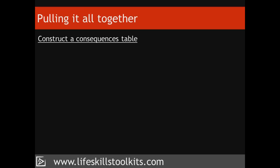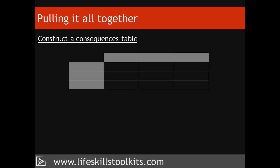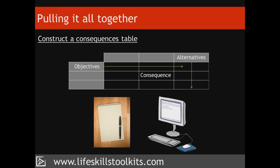Now, construct a consequences table. A consequences table has columns representing alternatives and rows representing objectives. Each cell contains a consequence based on an alternative that fulfills a decision objective. Such tables can be created using paper and pen or a spreadsheet or word processor. Creating this table allows you to organise your thoughts, especially when you have a large number of decision objectives and alternatives to consider. As we'll see in the next step — trade-offs — the table enables you to compare one alternative against another to find the best alternative for your decision.